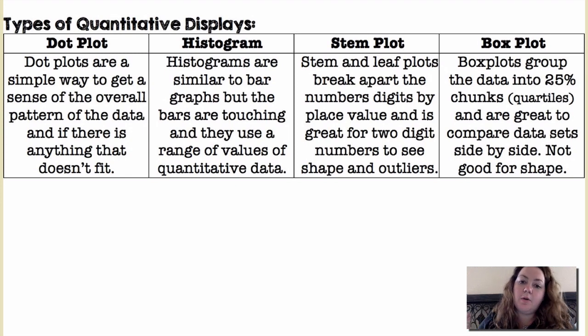A dot plot just puts a dot above each number on a number line. It's a really great way to kind of see the overall pattern and if there's anything that doesn't really fit with the pattern.